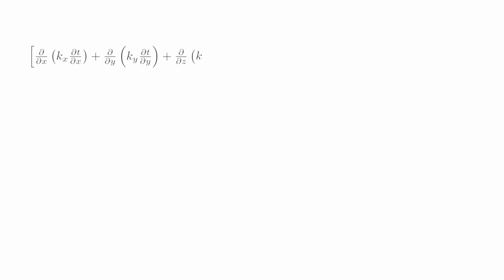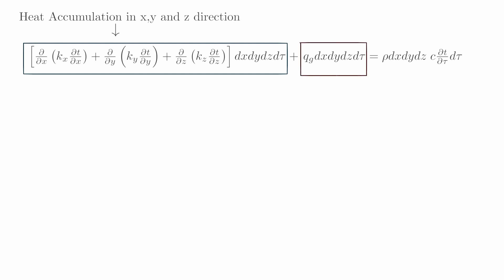By using energy conservation, we get total heat accumulation: heat accumulation in x, y, and z directions plus qg, the internal heat generation per unit volume. This case arises when internal heat is generated in certain materials, for example radioactive materials or reactors. This equation equals ρ (density) times dx dy dz (volume) times c (specific heat constant) times ∂T/∂τ. This is the time rate of change of heat capacity of the control volume.